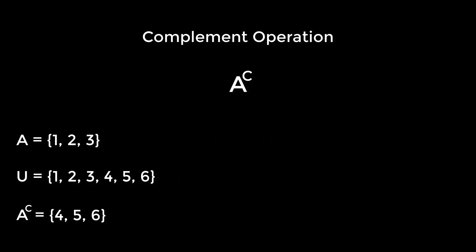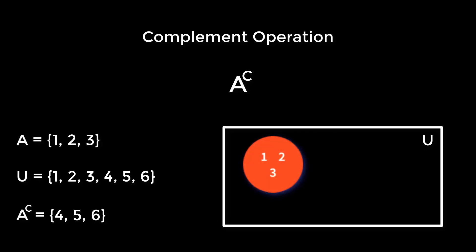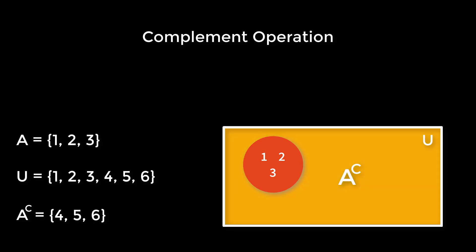Let's express the concept of complement using a Venn diagram. This is the universal set and this is A. The complement of A is everything except A — as simple as that. That's all about difference and complement operations. Let's see what we have in the next lesson.